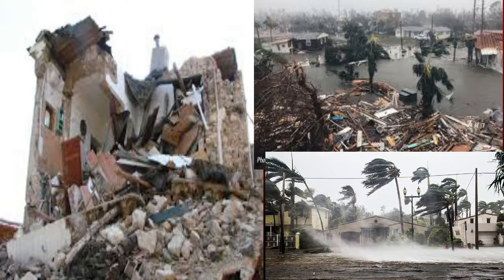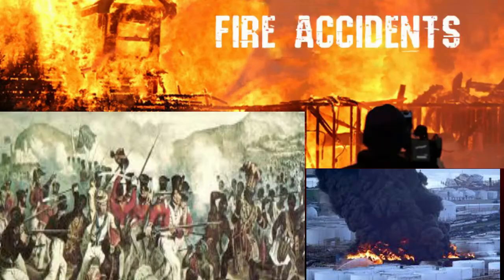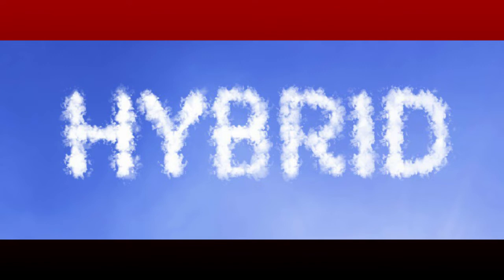A natural disaster is caused by natural factors. When a disaster occurs because of natural factors, we call it a natural disaster. For example, earthquake, floods, cyclone. A manmade disaster is caused due to human activities — for example, wars, fire accidents, industrial accidents. A hybrid disaster is when forces of nature are unleashed as a result of technical failure or sabotage.